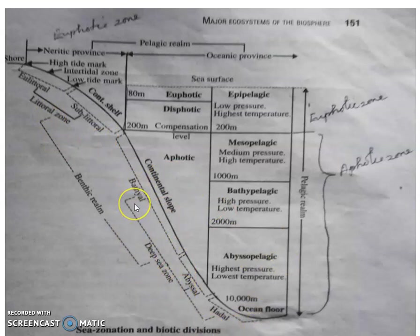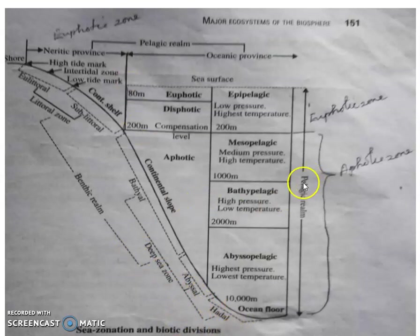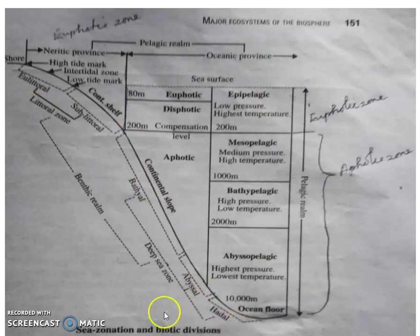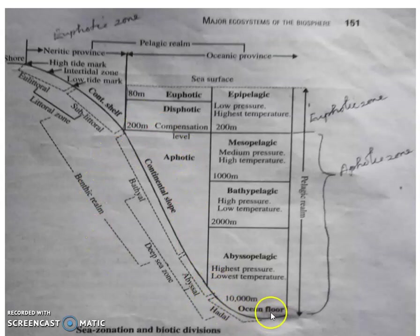The deep sea zone is again divided into the bathyal zone, abyssal zone, and hadal zone. Towards the bathyal, abyssal, and hadal zones, we could rarely see higher plants, and towards the ocean floor it is muddy, where mud-dwelling organisms are found. This is the brief outline of the zonation of the sea or the biotic division of the sea.